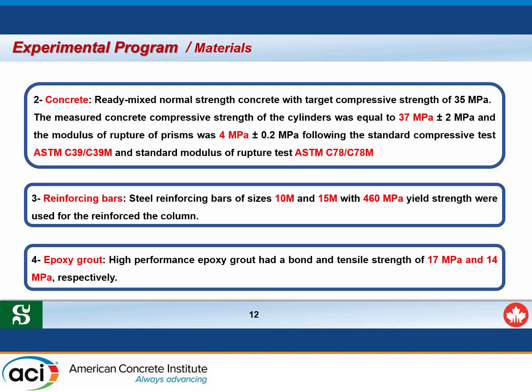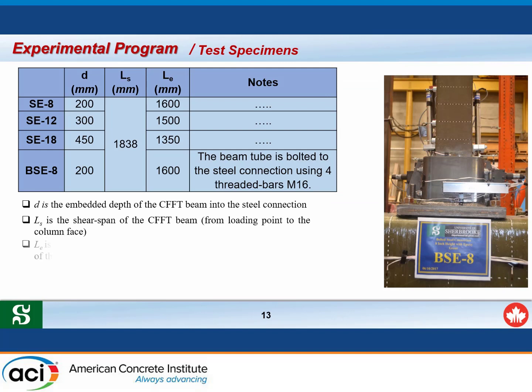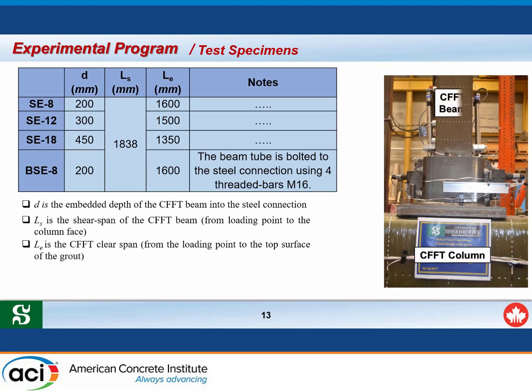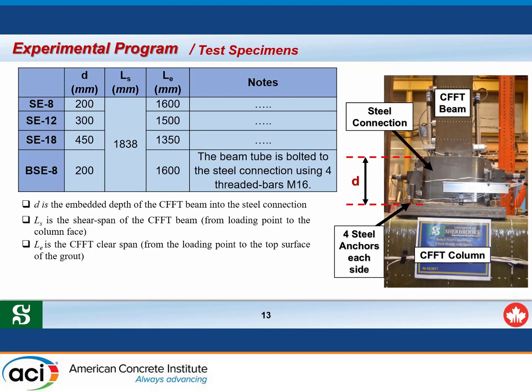The fourth material is high-strength epoxy grout. The idea of the connection is: a CFFT beam is connected to a steel connection, and the void between the CFFT and the steel connection is filled with epoxy grout. The steel connection then anchors to the CFFT column by four anchors on each side. There are four specimens in this study.